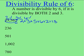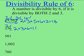Now in the next example of 236, it is even, so that means that 2 goes into 236. Now let's check for 3 — add up all the numbers. 3 does not go into 11, so that means that 3 does not go into 236. Therefore, 236 is not divisible by 6.